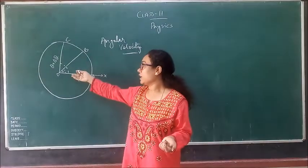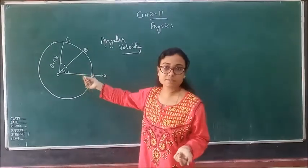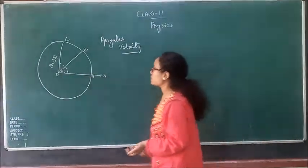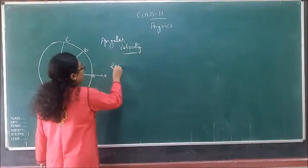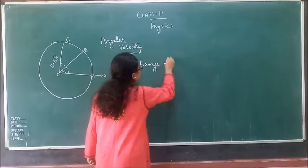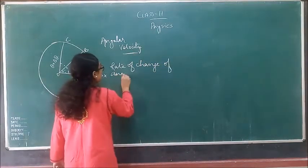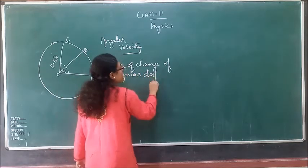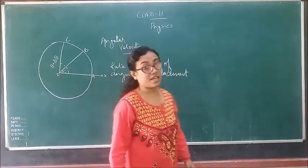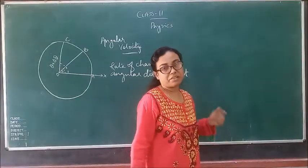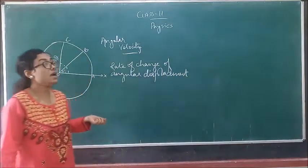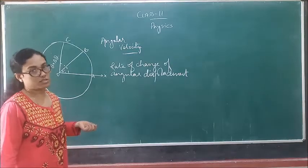Here I have given theta as well as change in angle, that is delta theta. What is angular velocity? Rate of change of angular displacement with respect to time. I think you have done this in class 9. Rate means time — rate of change of angular displacement with respect to time.